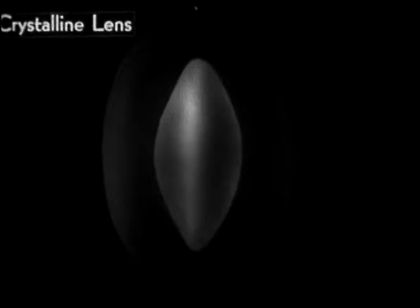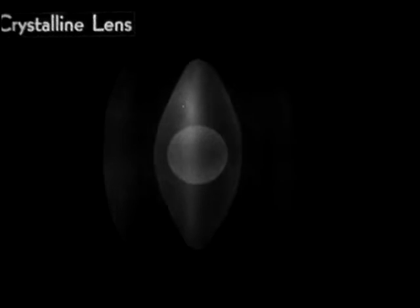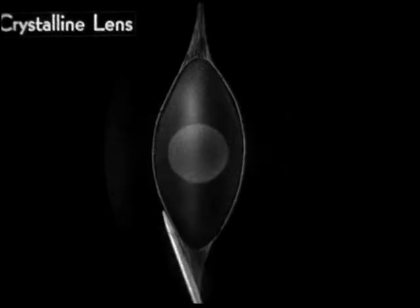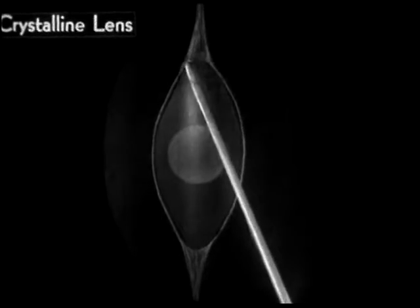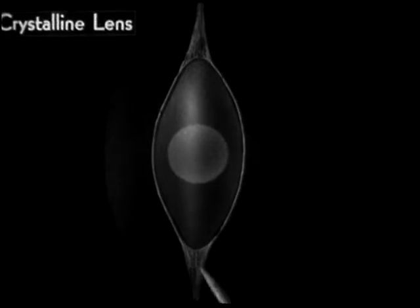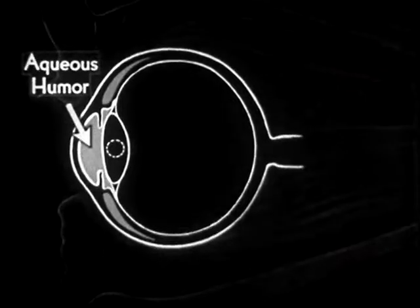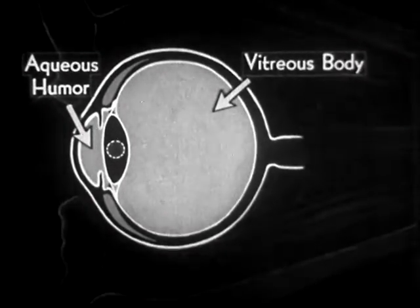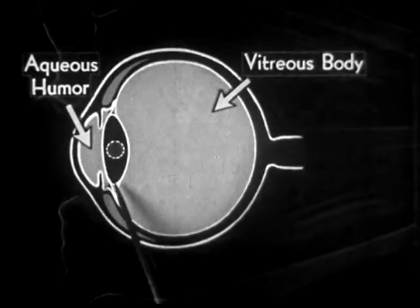Now let us look at this highly enlarged view of the lens itself. It has a soft, yielding body and is as transparent as glass, but it also has a firm ball-shaped central core or nucleus. It is contained within a thin elastic membrane and is suspended all around by a spoke-like arrangement of delicate threads or ligaments.